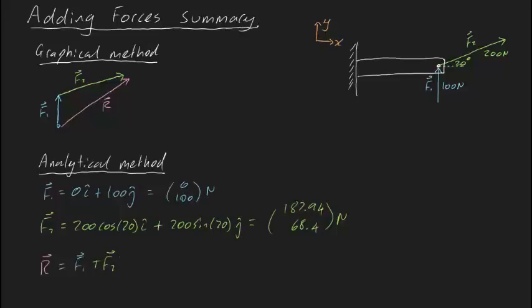And it's actually really easy to evaluate. What we do is we sum the elements. So we sum the i's, which is going to be 0 plus 187.94, which is easy. That's 187.94, like this. And then we sum the j's. So it's going to be 100 plus 68.4, which is 168.4, like this.